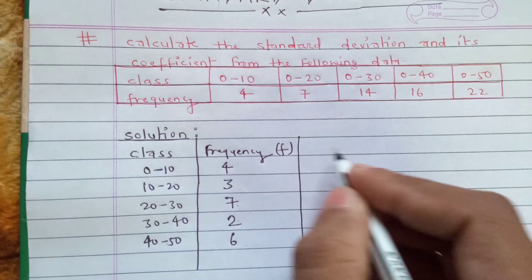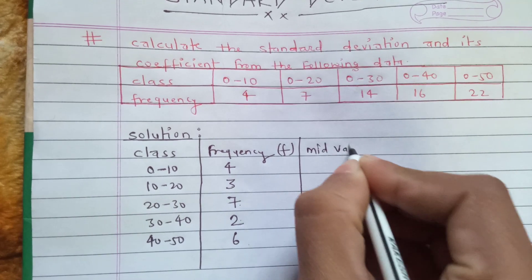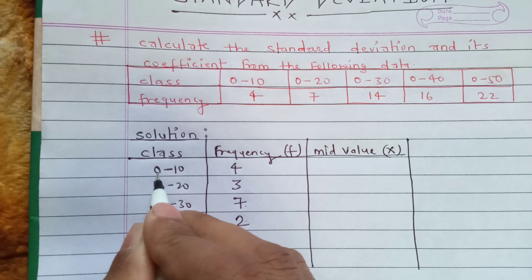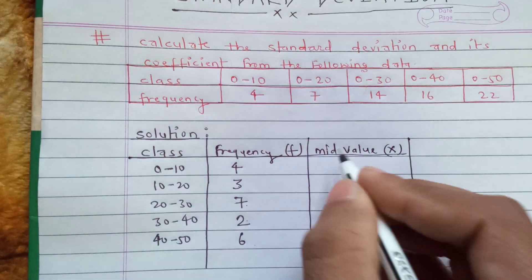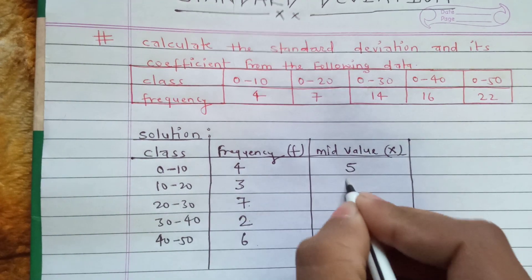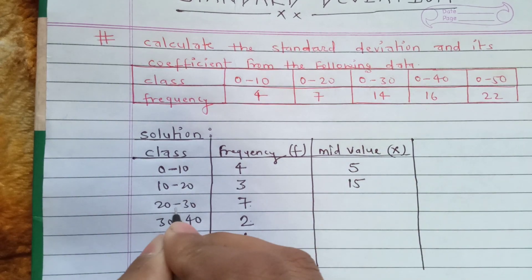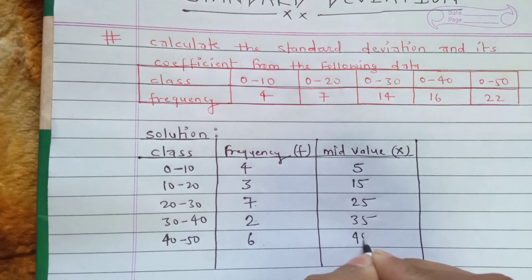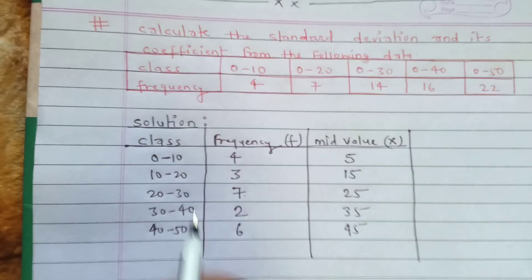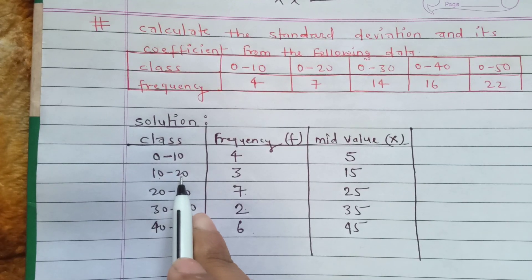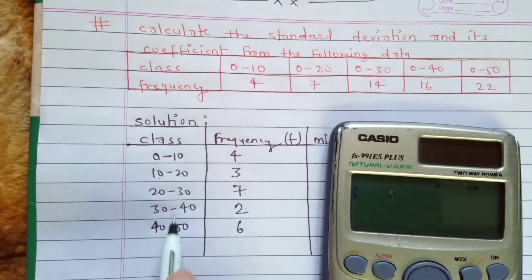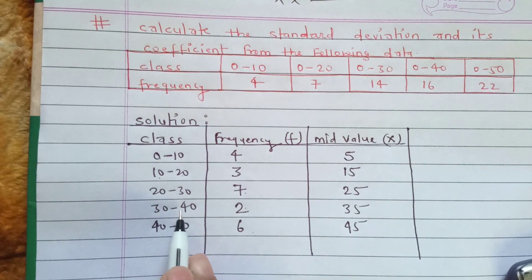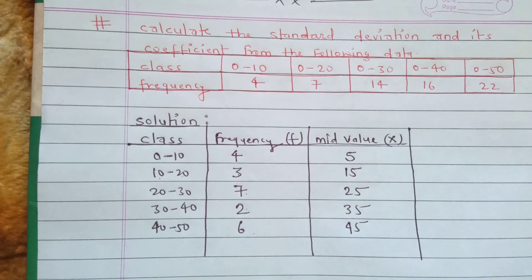Now we can write the mid value column, denoted by x. The mid value of 0 to 10 is 5, 10 to 20 is 15, 20 to 30 is 25, 30 to 40 is 35, and 40 to 50 is 45. You can calculate these as (0+10)/2 = 5, (10+20)/2 = 15, (20+30)/2 = 25, (30+40)/2 = 35, (40+50)/2 = 45.